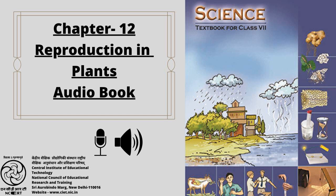12.3 Fruits and Seed Formation: After fertilization, the ovary grows into a fruit and other parts of the flower fall off. The fruit is the ripened ovary. The seeds develop from the ovules. The seed contains an embryo enclosed in a protective seed coat. Some fruits are fleshy and juicy, such as mango and orange. Some fruits are hard, like almonds and walnuts.